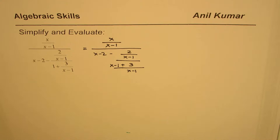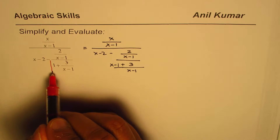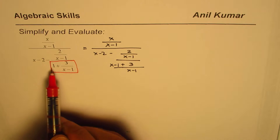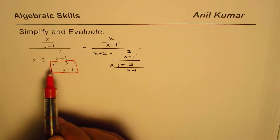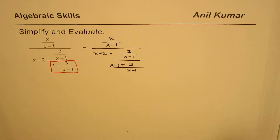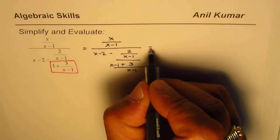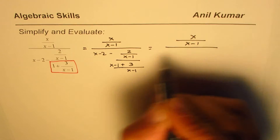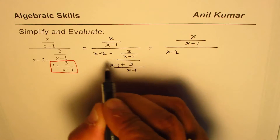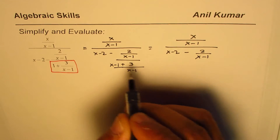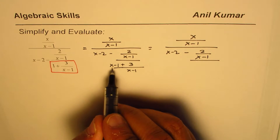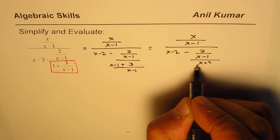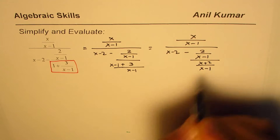We have simplified that part. Taking the common denominator of x minus 1 gives us x minus 1 times x minus 1 plus 3. From here, we get x minus 1 plus 3 equals x plus 2. So we have x plus 2 over x minus 1.